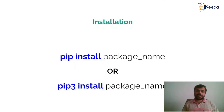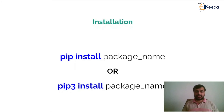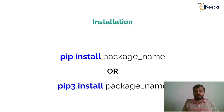If the package is not installed, it will look for the package in its own repositories, download that package, and start the installation. Once the installation has started it will also look for any kind of dependencies that the package is having. If there are any other dependencies which are not available on your machine it will download those dependencies as well and install them.